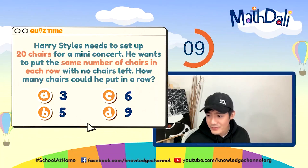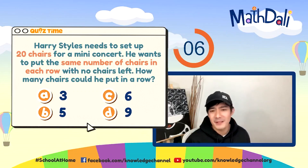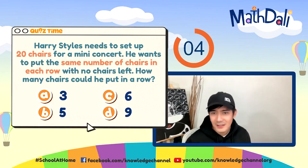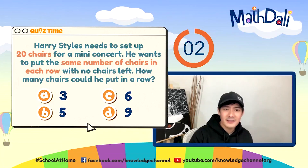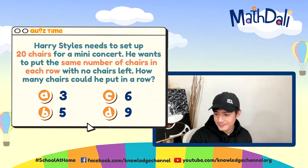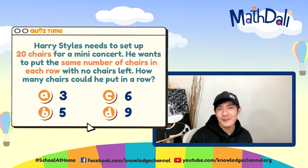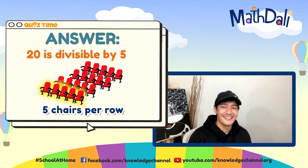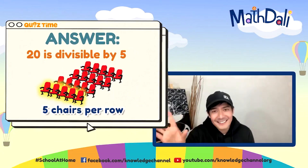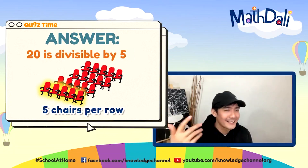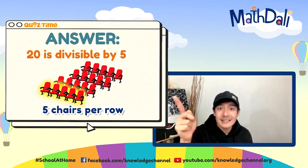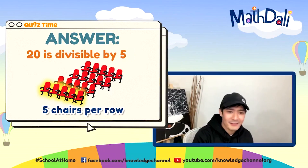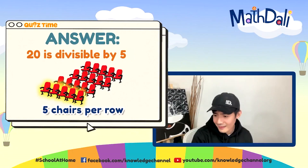Same number of chairs in each row — let's apply some divisibility rules. Time is up! The correct answer is B: 5, because 20 is divisible by 5. Did you get the correct answer?